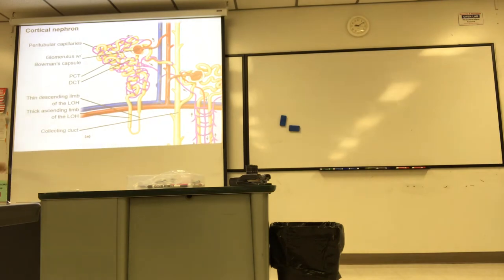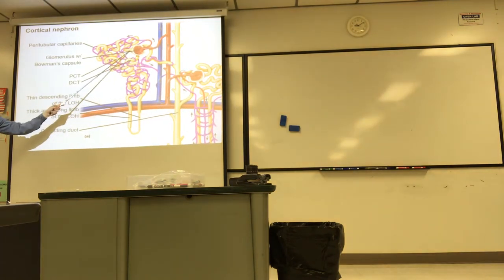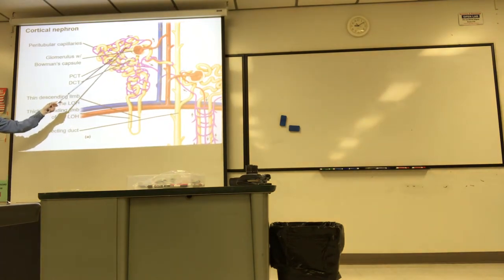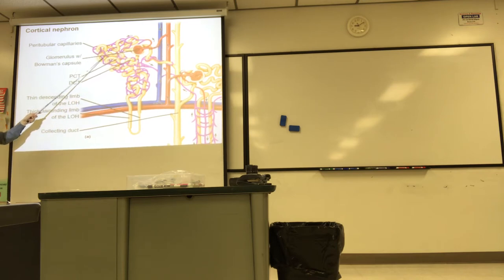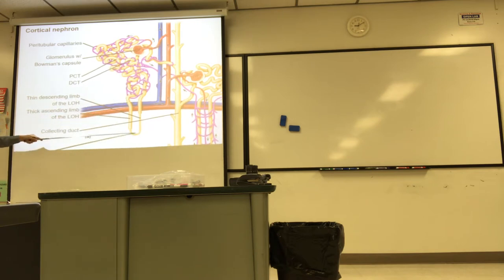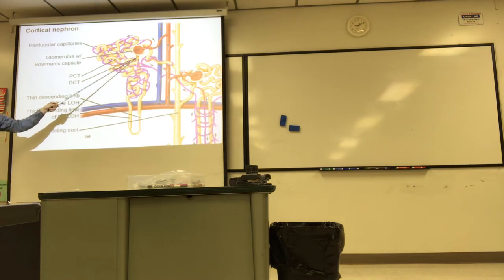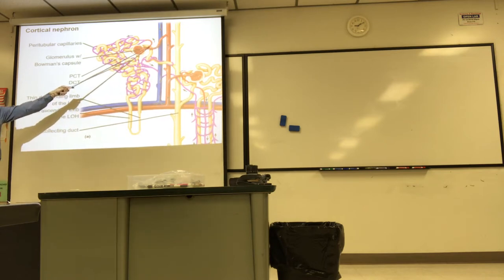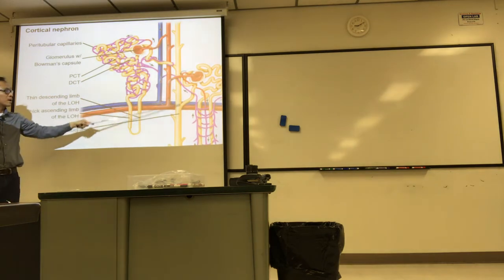So once again, use the poles as a clue — vascular pole, tubular pole. A lot of PCT here; I'm just going to follow it all the way down. It goes all the way down here — this is loop of Henle, it turns backwards. Now we're into the DCT and it's going to go all the way back by the vascular pole, and then it's going to dump into the collecting duct.